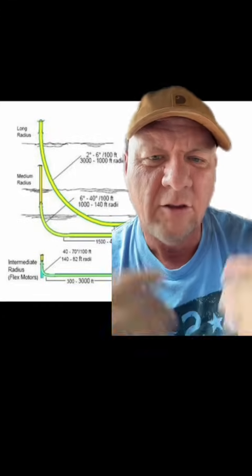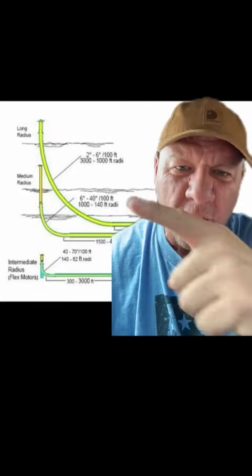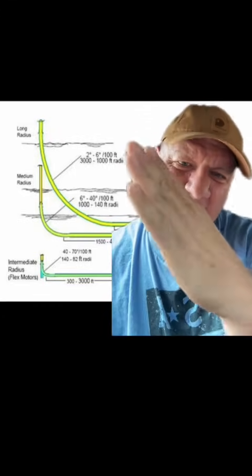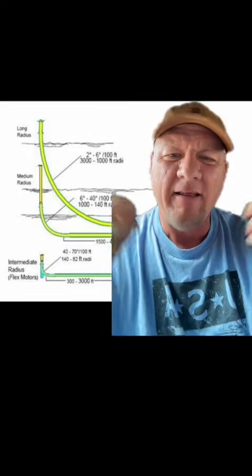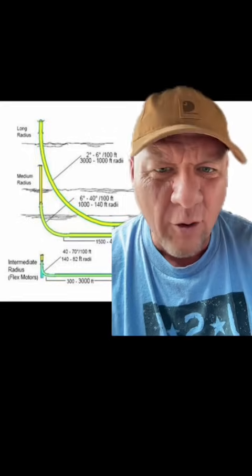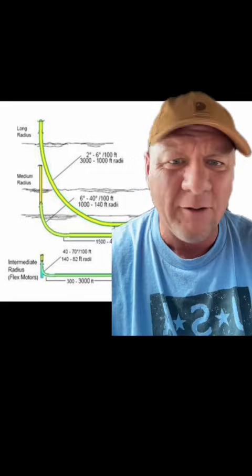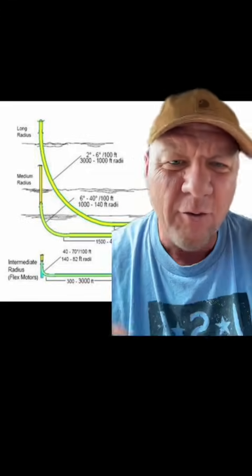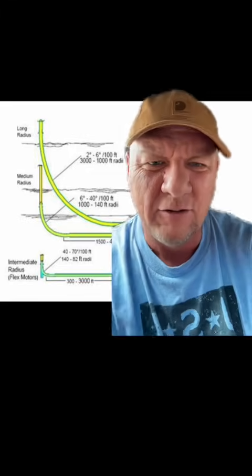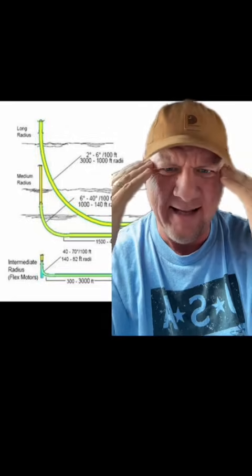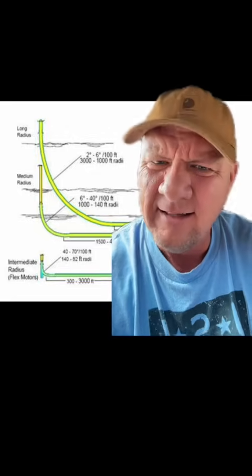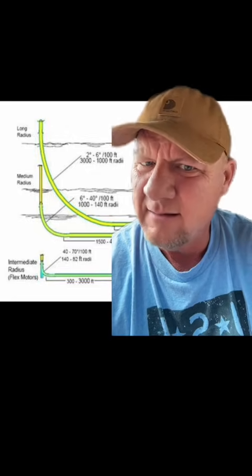With a thousand-foot section, that would be super easy. So how do they control this curve and get it just right? How do they know where they are in the well when they're just a mile down in a hole? How do they know they're doing this correctly when they can't see it?